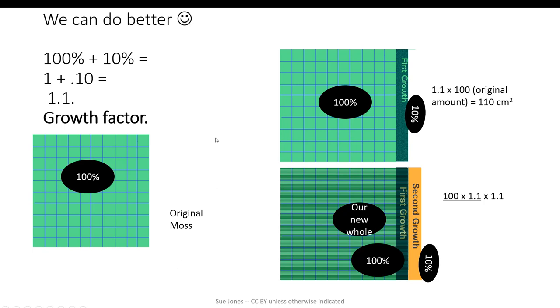There's a shortcut. With linear growth, we're adding the same amount each change. With exponential change, we're multiplying by the same amount. To figure that out, we add the percent first, changing the decimals. 100%, 1, plus 10%, 0.10, equals 1.1, our growth factor.